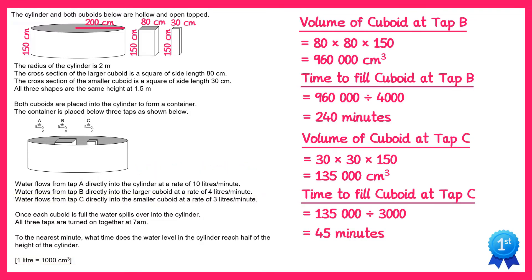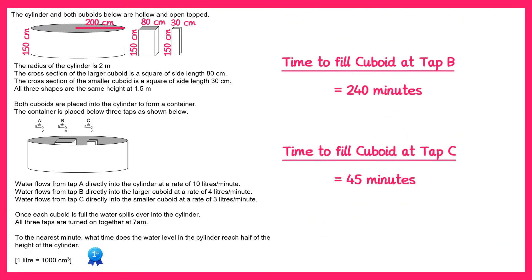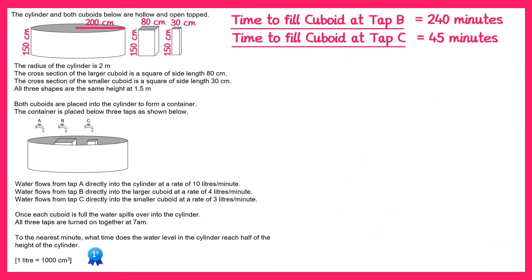So the time to fill the cuboid at tap B is 240 minutes and the time to fill the cuboid at tap C is 45 minutes. We're interested in when the water level in the cylinder reaches half of the height of the cylinder. The height is 150 centimetres, so we want to know when the water level reaches 75 centimetres.